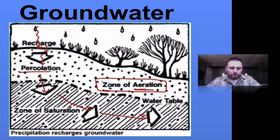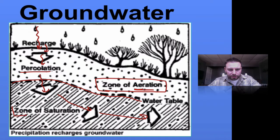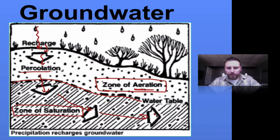As the water percolates further down, it's going to hit our water table. This is the top of our zone of saturation. In the zone of saturation, the pore spaces between the sediments are filled with water — the ground is saturated — and at that point water can continue to move.